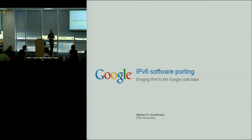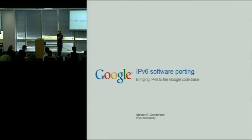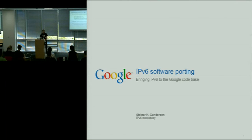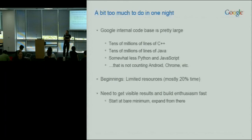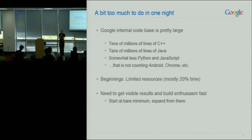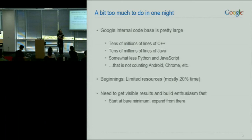I'm going to talk about the experiences of the Google IPv6 internal software porting effort, which I've been part of for the last two years or so. Google has a pretty large code base — not humongous by any standards, but pretty large. Tens of millions of lines of C++ code. I'm going to talk mostly about C++ because that's where the interesting parts lie for us.